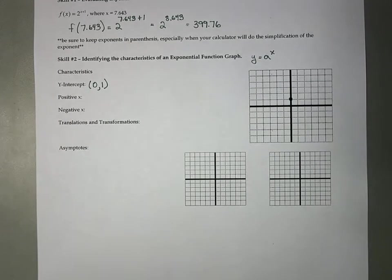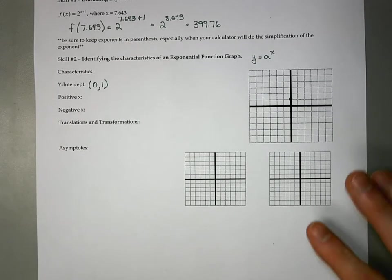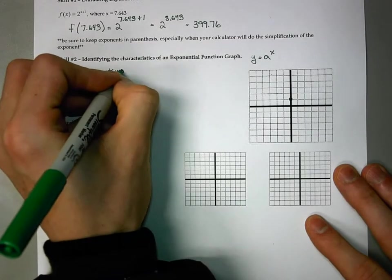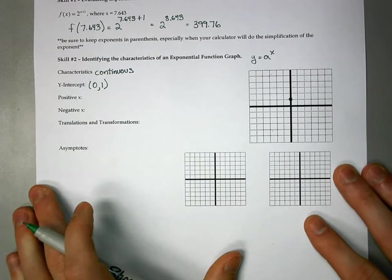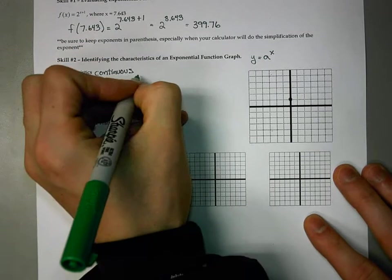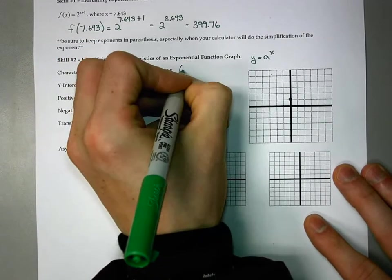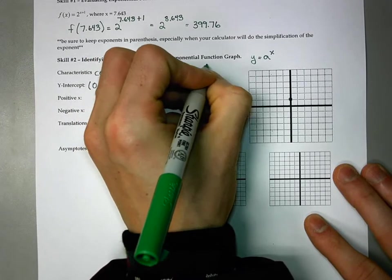The other characteristics that are important to know about an exponential function is that it is continuous, which means you can draw it without lifting up your pencil, and it increases from left to right, which is from negative infinity to infinity.